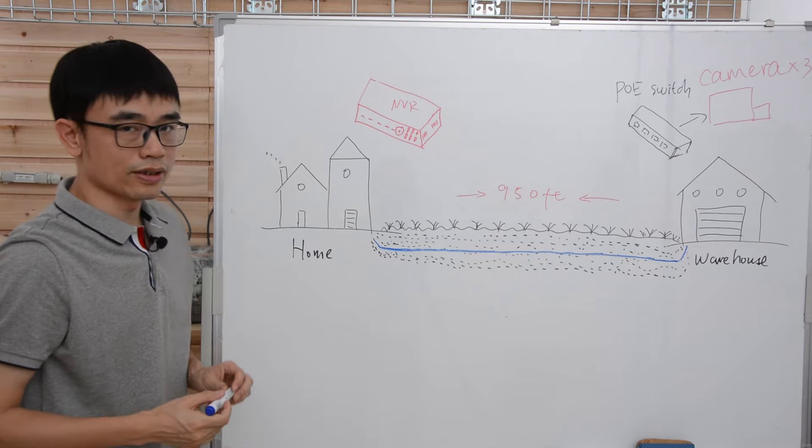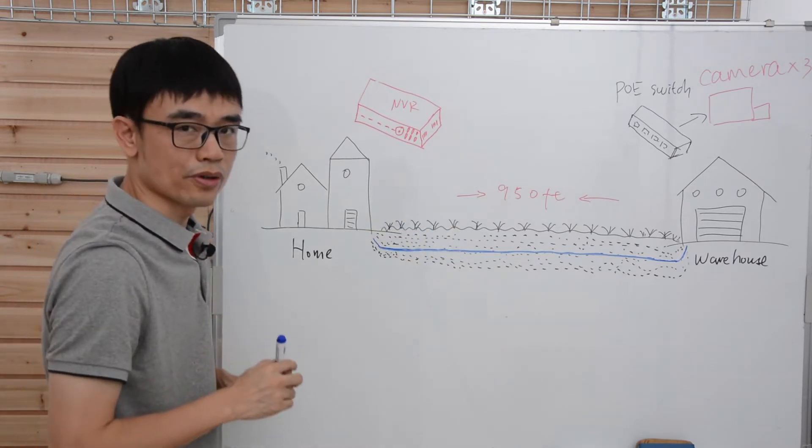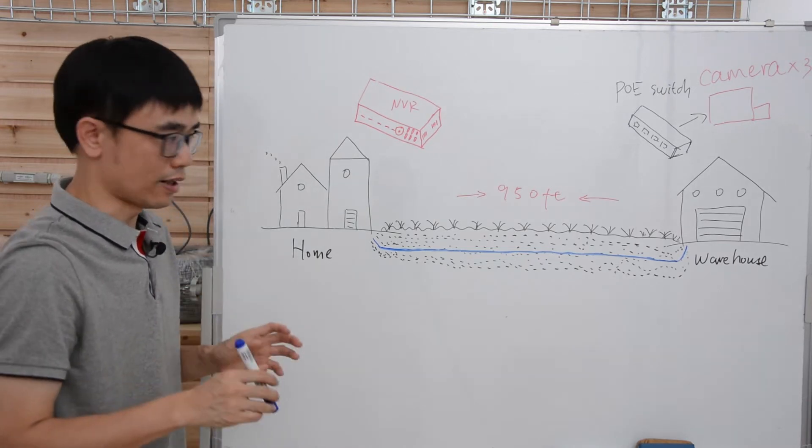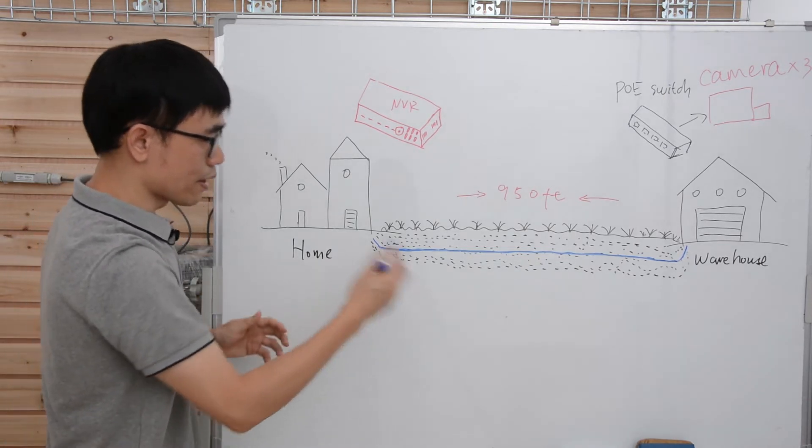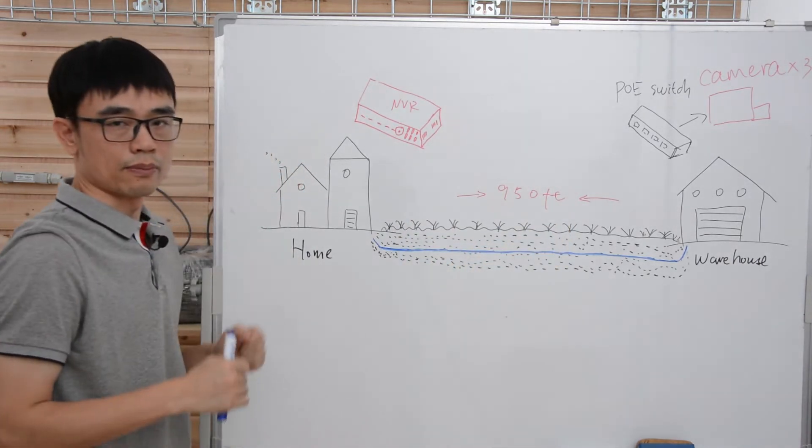The possible solution is he can dig up the cable and add the PoE extenders, probably two. One PoE extender can repeat about 300 feet, right? So there will be a lot of messy work to get the cable out and make the connections.